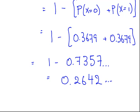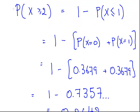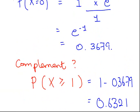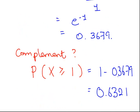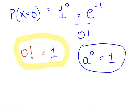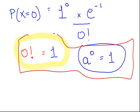So to summarize the key things: complements are always very useful, particularly when dealing with X equal to 0, which tends to come up in a lot of exams. Remember that 0 factorial is 1, and anything to the power of 0 is also 1. And just get some practice with the calculator. That's an introduction to the Poisson distribution formula.